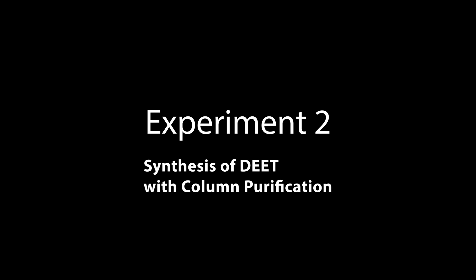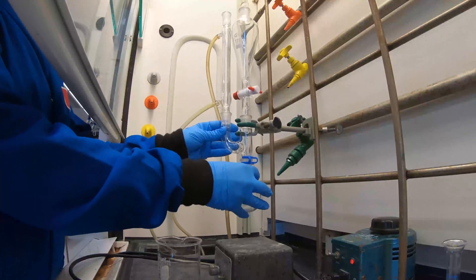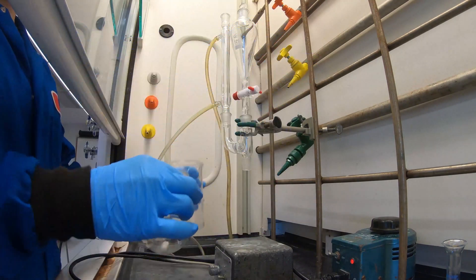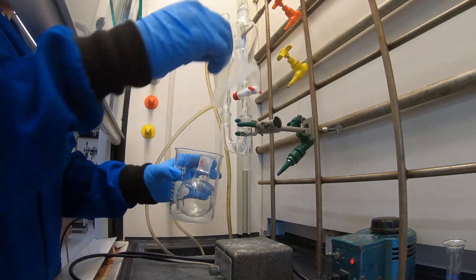Experiment two, DEET synthesis. Begin by assembling an apparatus for addition under reflux. This will include your claisen adapter, your addition separation funnel, and then your condenser.